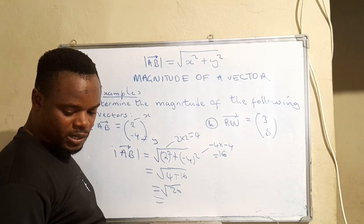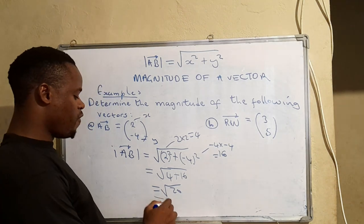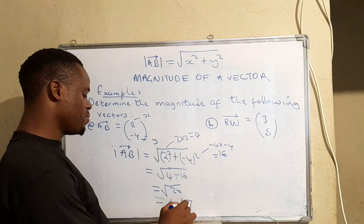So the square root of 20 gives us 4.47 units.